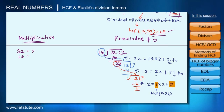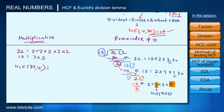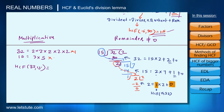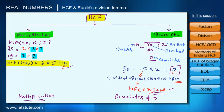To verify, we use the multiplication method on 32 and 15. Factorizing 32 gives powers of 2, and factorizing 15 gives 3×5. There are no common factors between 32 and 15. But remember, 1 is a factor of every number, so 1 is the HCF of 32 and 15. This confirms the same answer from both methods.